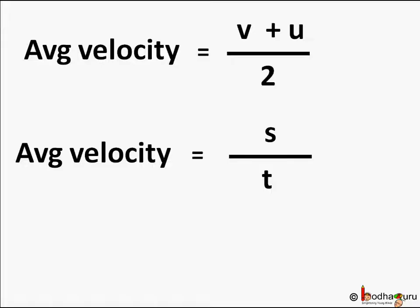But we know average velocity is equal to displacement s by time taken t. So as left hand side looks same for both the equations, we can say v plus u by 2 is equal to s by t.